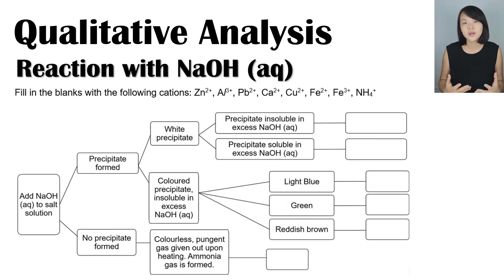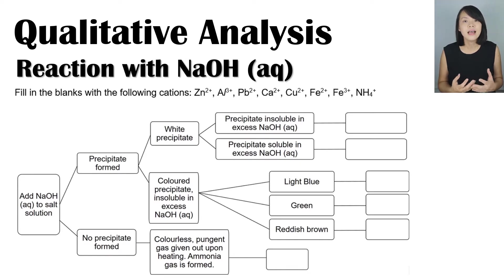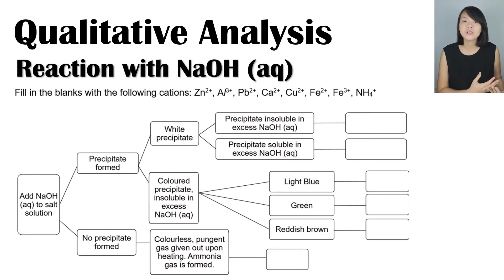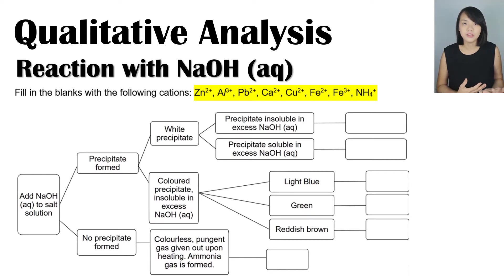In this video we'll be focusing on qualitative analysis. Qualitative analysis is the process of identifying unknown substances in a solution. At all levels, students are required to describe the use of aqueous sodium hydroxide and aqueous ammonia to identify different ions such as aluminium, ammonium, calcium, copper(II), iron(II), iron(III), lead(II) ions, and zinc ions.